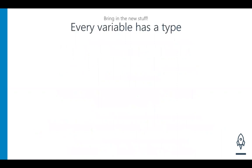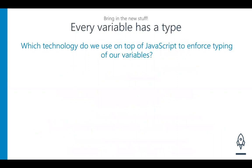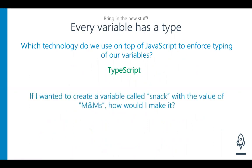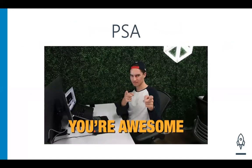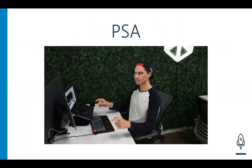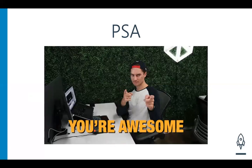Every variable has a type — which technology do we use on top of JavaScript, sugar-coated, to enforce that typing? TypeScript. If I wanted to create a variable called 'snack' for the value of M&Ms, I'd write: let snack: string = 'M&Ms'. Awesome job everyone — you all got all that stuff.